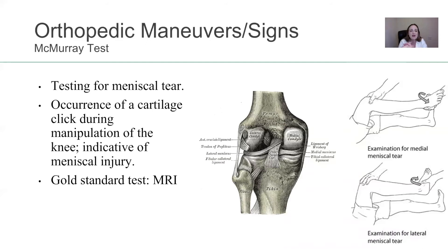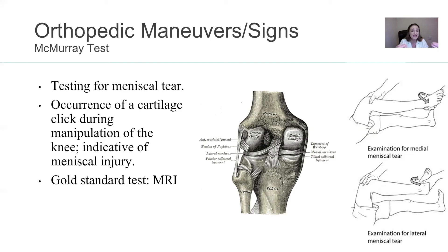McMurray test. A lot of students ask me how do I remember McMurray versus other tests? I like to think of x-rays, because with bone and x-rays that's how you see bones best. When I look at the word McMurray, the word 'ray' is in McMurray — as in x-ray. So when I see McMurray, I think of an x-ray, I think of bones. And the other thing I like about this name is that it has the letter M. What are you testing with McMurray? You're testing for meniscal tear, which also starts with an M. So McMurray: ray for x-rays, for bones, and the M is for meniscal tear.